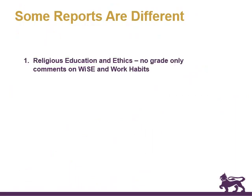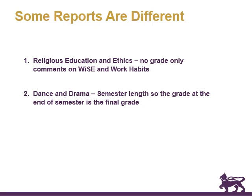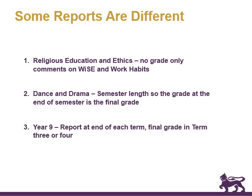Just a quick note: some reports are different. RE doesn't have grades, only work habits in WISE. In second semester, dance and drama are semester-long subjects, so the grade is at the end of the semester — that's the final grade you get. For Year 9 reports, you get an overall grade at the end of the term as the final grade, without an overall grade apart from Art. Then you get a final grade at the end of Term 3 or 4 depending on when you go to Clunes. That's it — that's a short version of the MYP grading scale at Wesley College. Thank you.